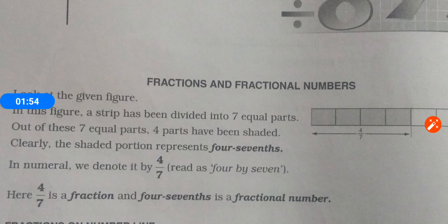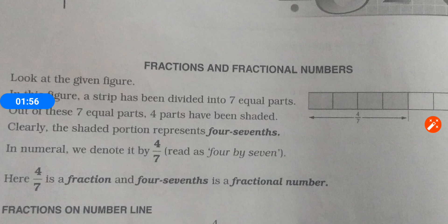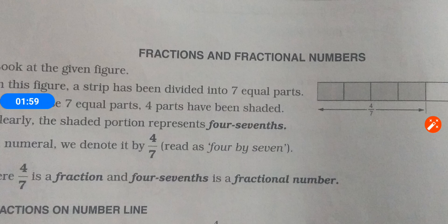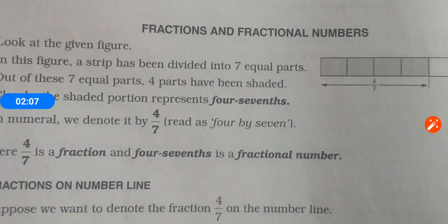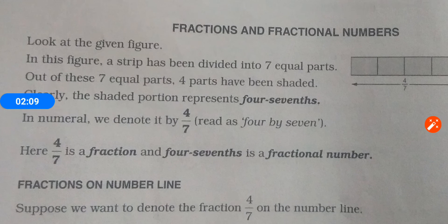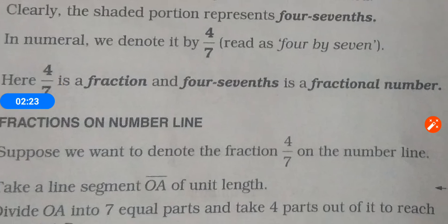Four by seven is a fraction, and four-seventh is a fractional number. As per the definition, the number is of the form a by b. Here four is your numerator and seven is the denominator.